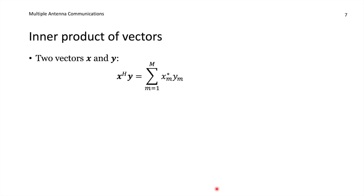The conjugate transpose appears frequently because it is part of the definition of the inner product. If we have vectors x and y and would like to compute their inner product, we take x conjugate transpose times y, which equals the summation over all elements: for the m-th element, we take xm with the conjugate multiplied by ym. This is the inner product.